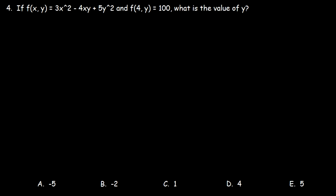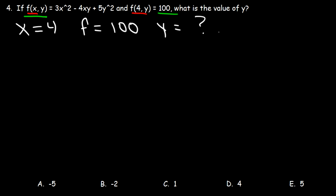Here's another example. If f of x comma y is 3x squared minus 4xy plus 5y squared, and f of 4 comma y is 100, what is the value of y? The first letter x matches with 4, so x is equal to 4. The entire function is 100, so f is 100, and our goal is to find the value of y. We're going to replace f with 100, replace x with 4, and find the value of y.